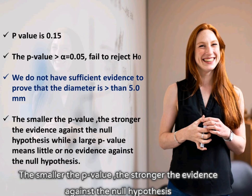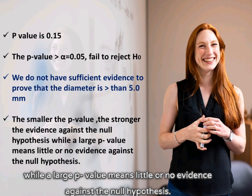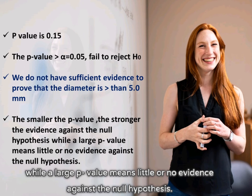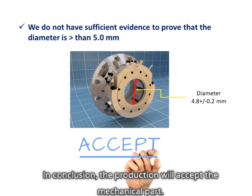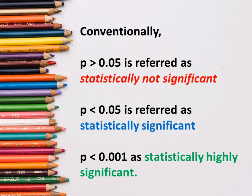The smaller the p-value, the stronger the evidence against the null hypothesis, while a large p-value means little or no evidence against the null hypothesis. In conclusion, the production will accept the mechanical part. Conventionally, p greater than 0.05 is referred to as statistically not significant. p less than 0.05 is referred to as statistically significant. p less than 0.001 is statistically highly significant.